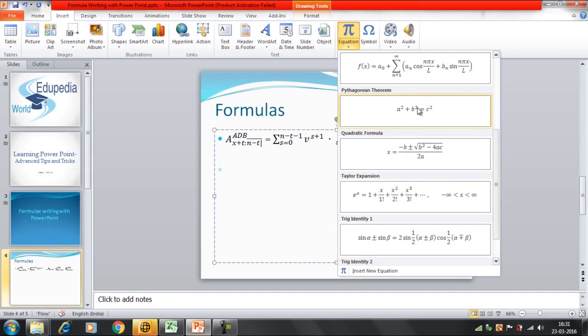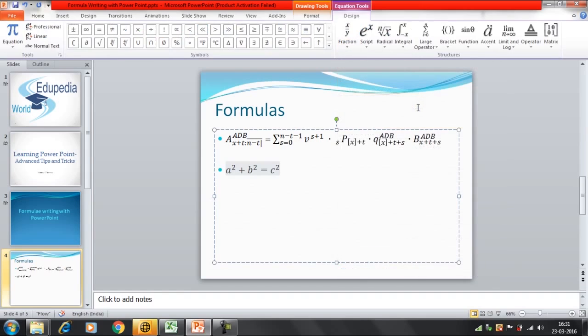For example, if you want to write a Pythagorean theorem, then you can select here. Now, if you want further, you can add here, like a square plus b square. Now, I want to write here c square.